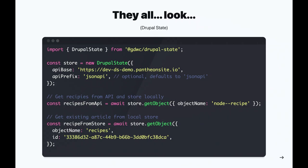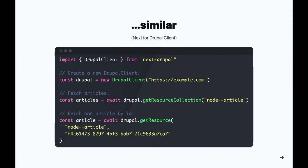They're all pretty similar. This is just a hello world example using Drupal State — you import the package, create an instance of the store, and there are methods you can use to get all of the recipes from JSON API or an individual one. Drupal State does some local caching by default, so the first time it'll hit JSON API and the second time it'll get it from the local store. The Next.js for Drupal client has a pretty similar API — you can get all articles or an individual resource.